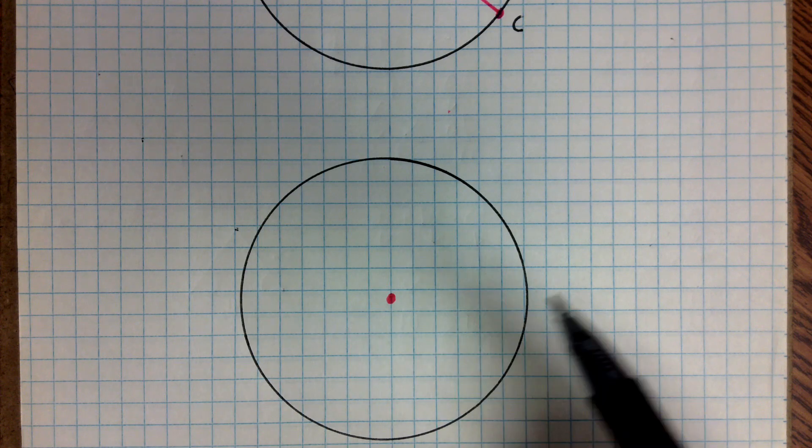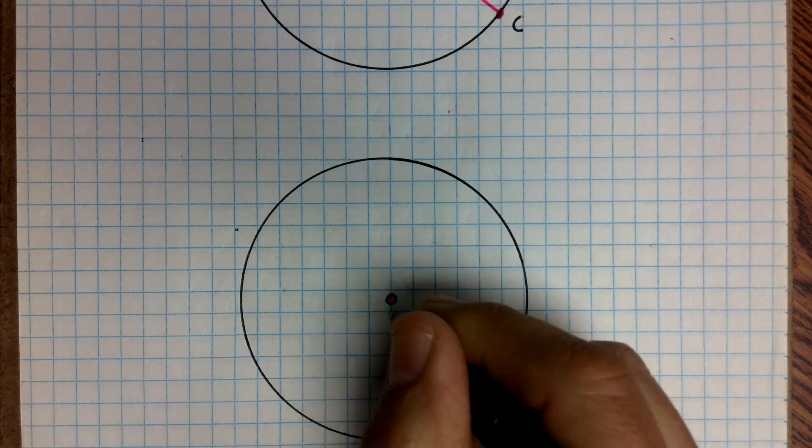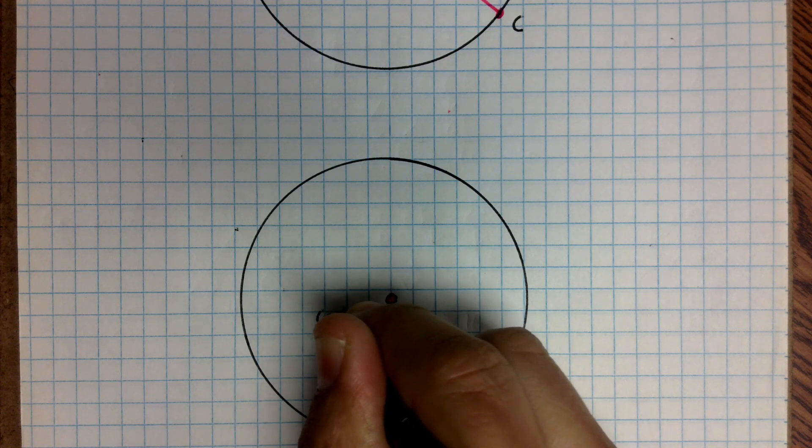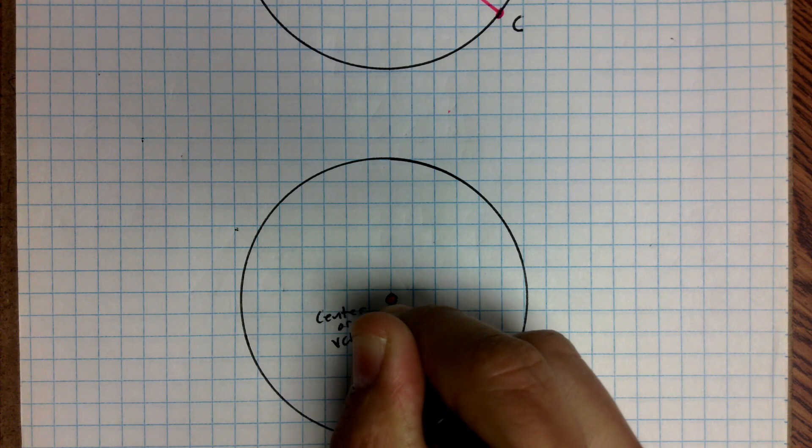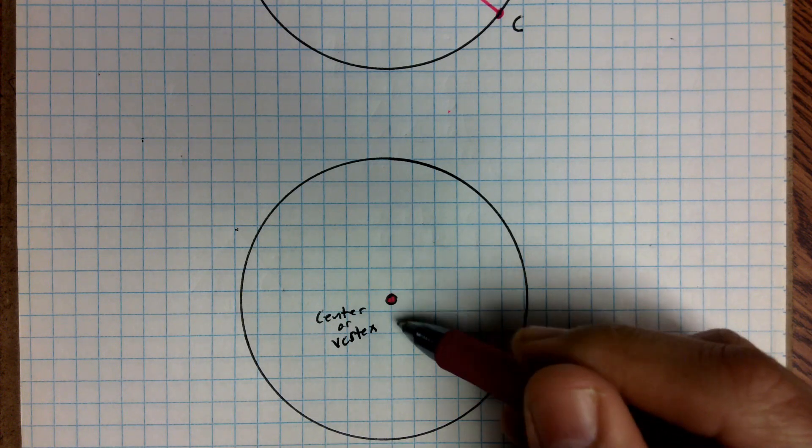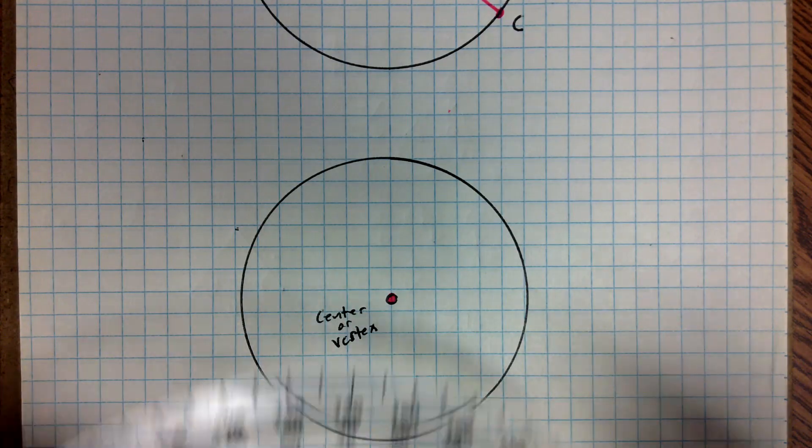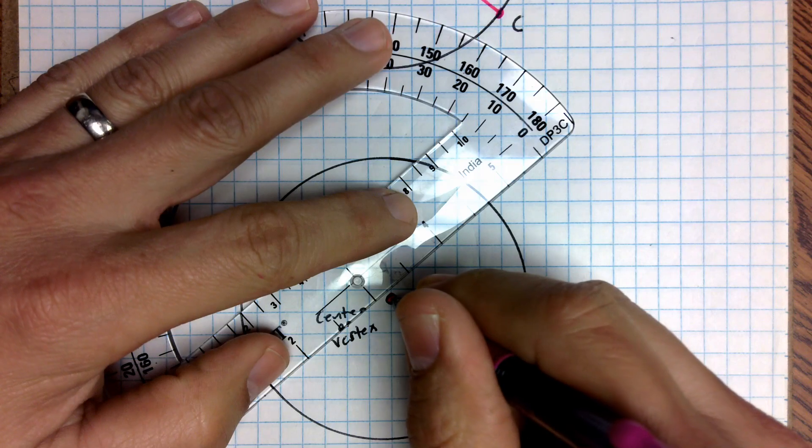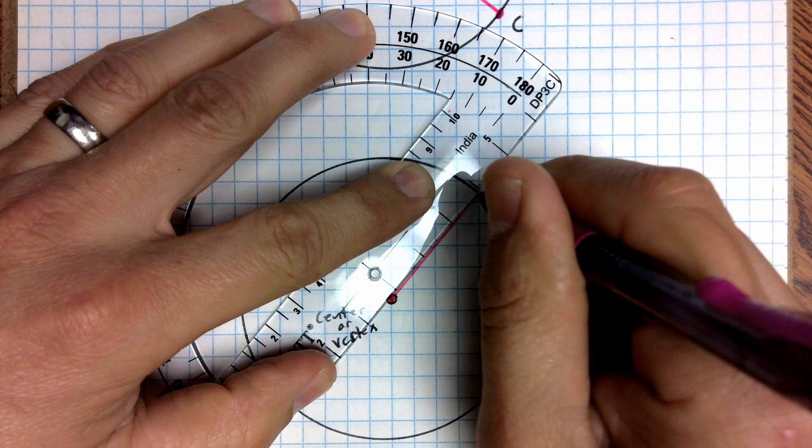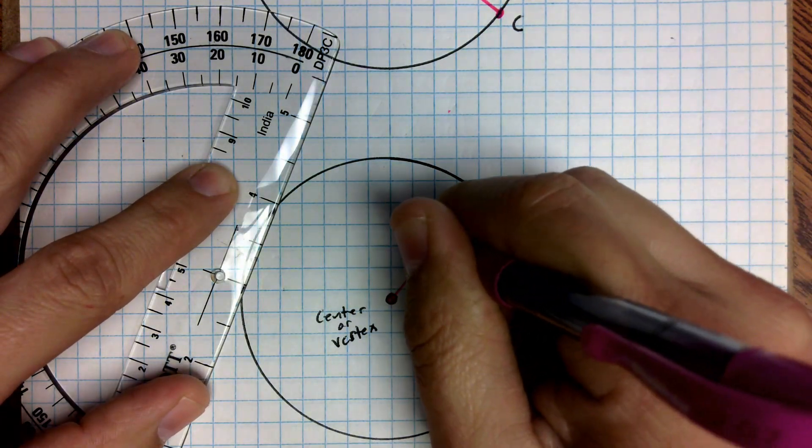For example, in this circle, this point right here is in the very center of the circle. So we're going to call this point the center point, or I'm also going to make it our vertex. And the reason I'm going to do that is because we're going to draw two radiuses that come from it. So for instance, I'm going to make an angle. Let's say that I draw a line from here to the circumference of the circle. So this is a radius, right? We would call this a radius.